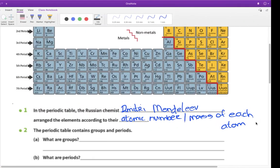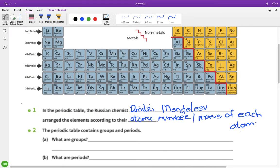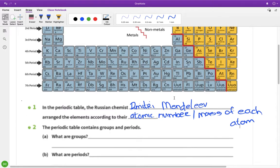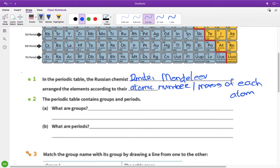Yeah, so he arranged them according to their mass and atomic number. The periodic table contains groups and periods where groups, so groups are the - they are vertical groups containing elements.